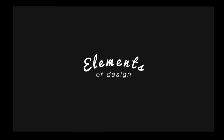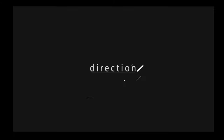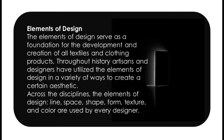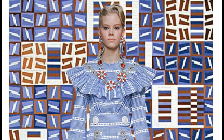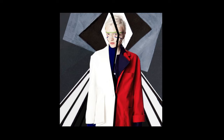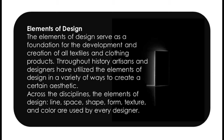In this chapter we are going to learn about the elements of design. Any design in the world can be broken down into five elements: line, shape, form, texture, and color. Elements of design serve as a foundation for the development and creation of all textiles and clothing products. Throughout history, artisans and designers have utilized the elements of design in a variety of ways to create a certain aesthetic across the discipline.